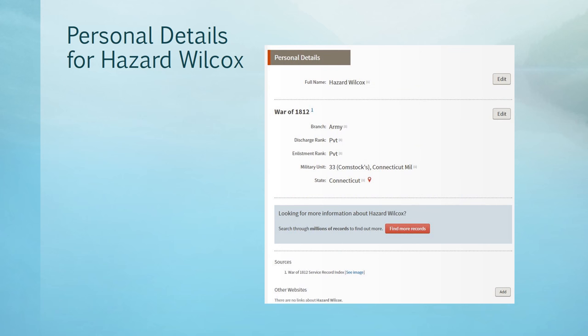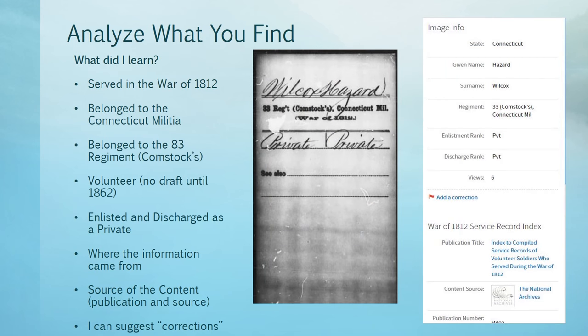Here are some of the personal details for Hazard Wilcox. I found him in the right time frame and the right place. I learned that he served in the War of 1812, that he belonged to the Connecticut Militia and the 83rd Regiment, which was Comstock's Regiment. I learned that he was a volunteer — there wasn't a draft until 1862. I learned he was enlisted and discharged as a private, and I found out where the information came from. I even noticed that I can make corrections if I have them.